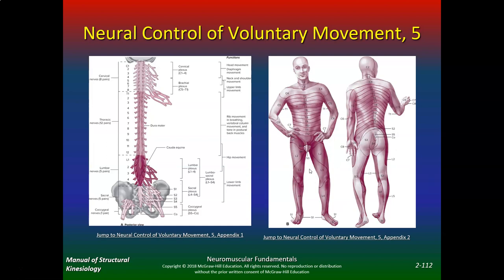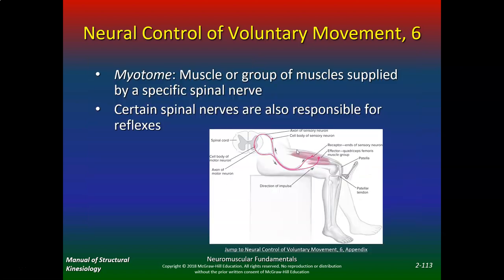Know all the major dermatomes, especially in the legs and arms. For athletes and sports, we're most concerned with cervical and lumbar levels — you don't need to focus as much on the trunk like T2 or T3. A myotome is a muscle or group of muscles supplied by a specific spinal nerve — know the difference between a dermatome and a myotome. Certain spinal nerves are also responsible for reflexes.